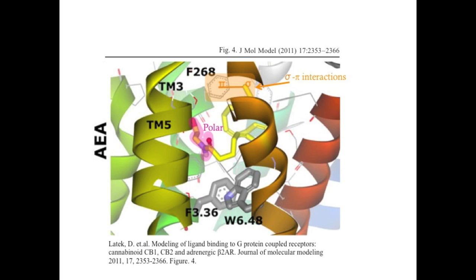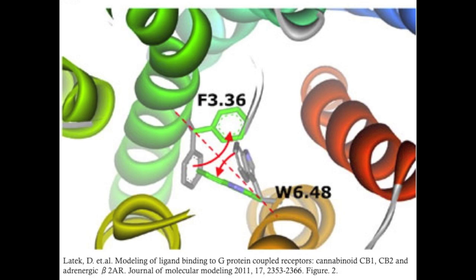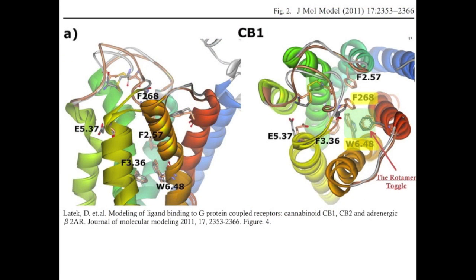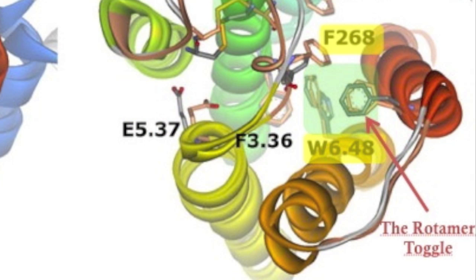Both anandamide and THC binding cause a conformational change in the heptahelical receptor. Upon ligand binding, aromatic side chains on the CB1 receptor rotate. The set of residues with aromatic side chains responsible for this conformational change are called the rotomer toggle switch. It is thought that this conformational change may be responsible for the early activation stages of the receptor.